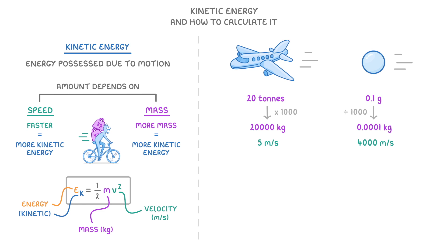And we're now ready to plug these values into our equations. For the plane, we do one half, or 0.5, times its mass of 20,000 kilos, times its speed of 5 squared. And remember that it's only the speed that's being squared, not the entire thing.